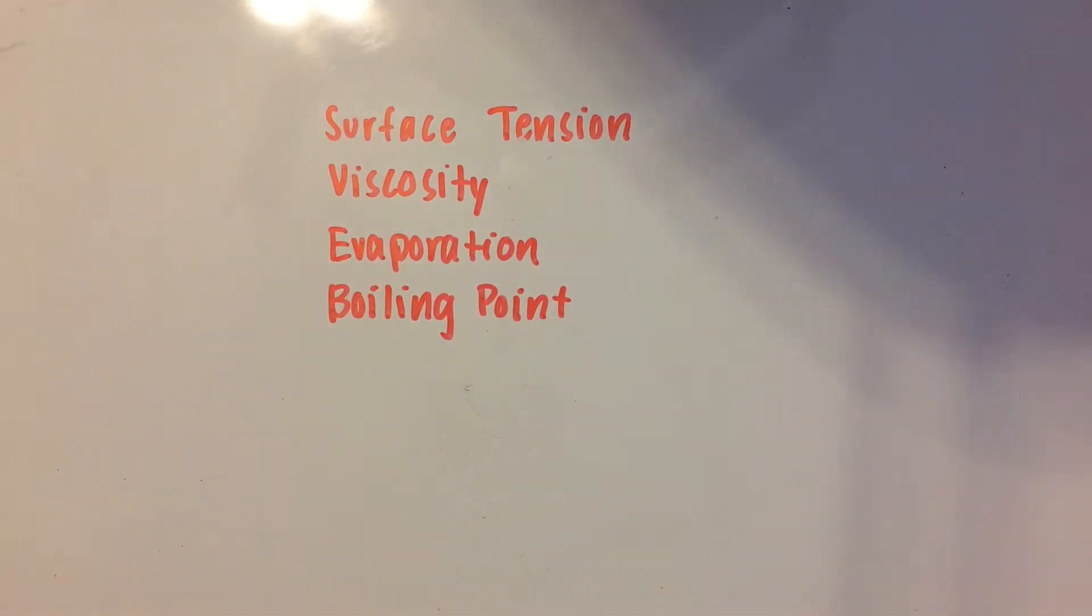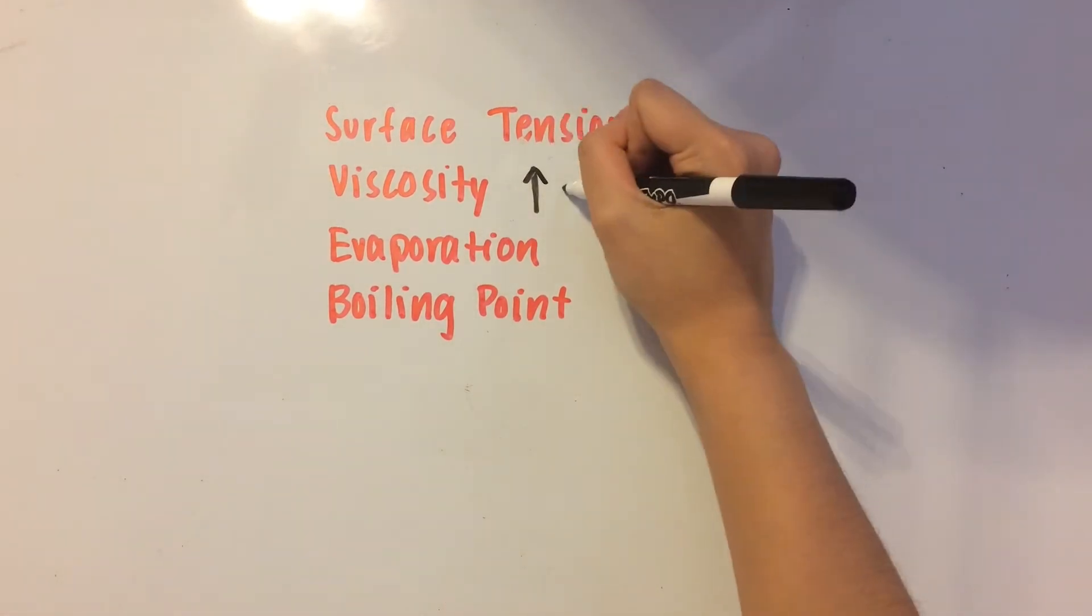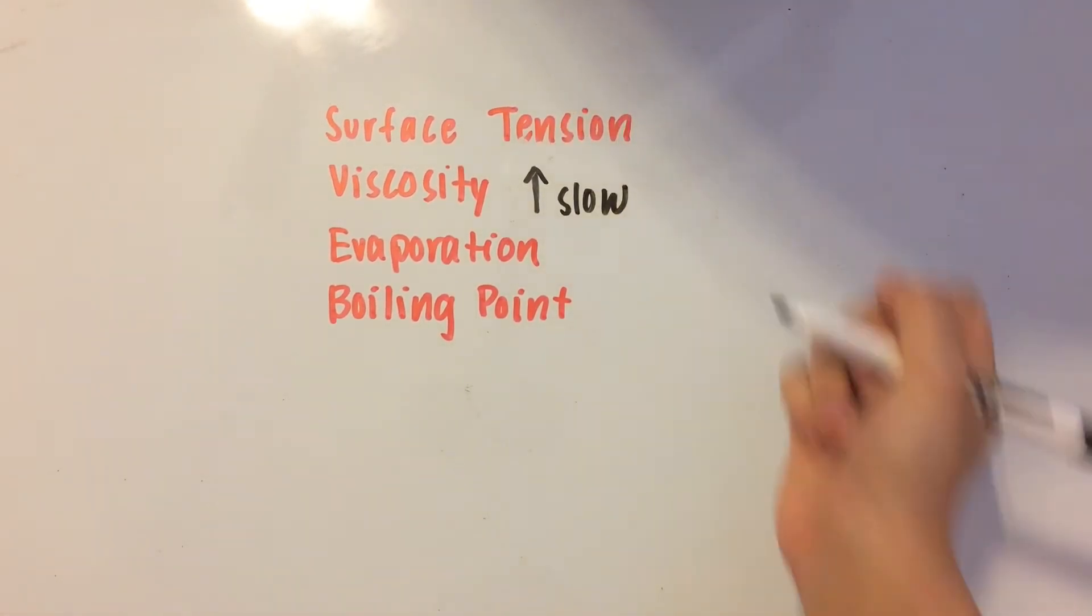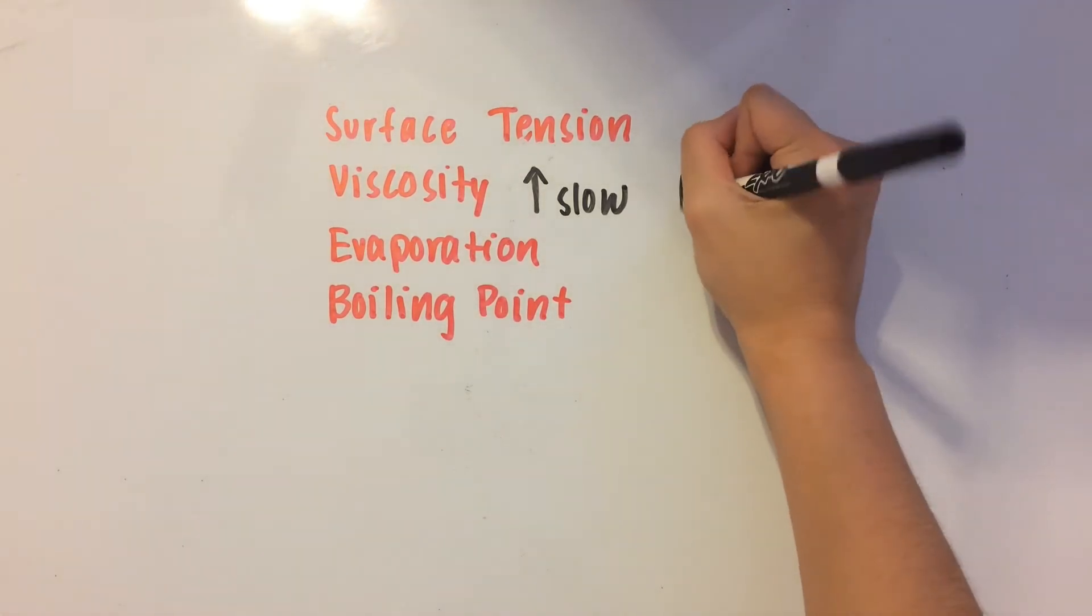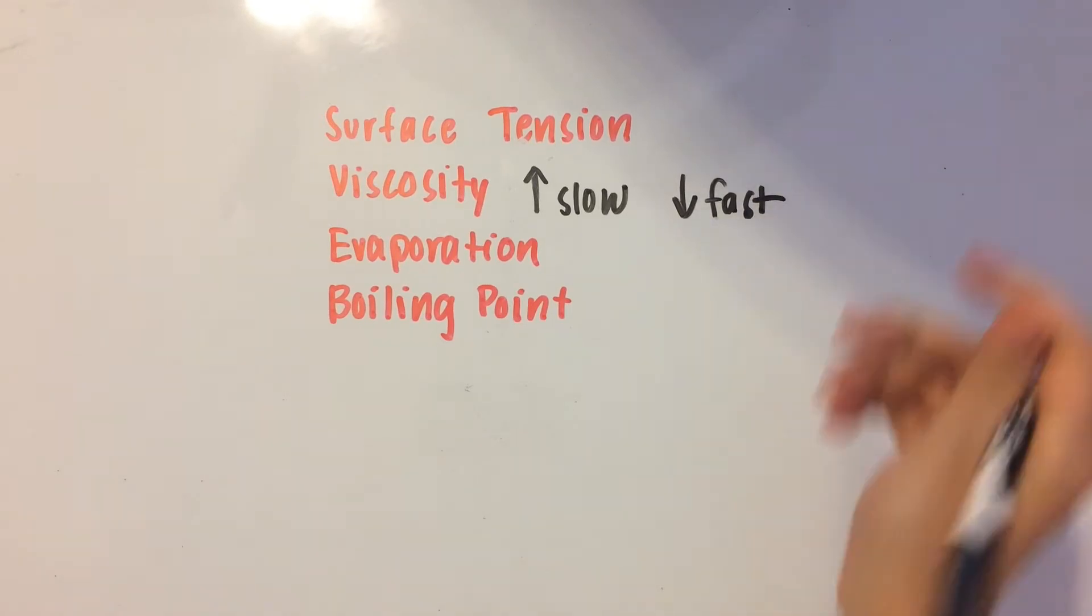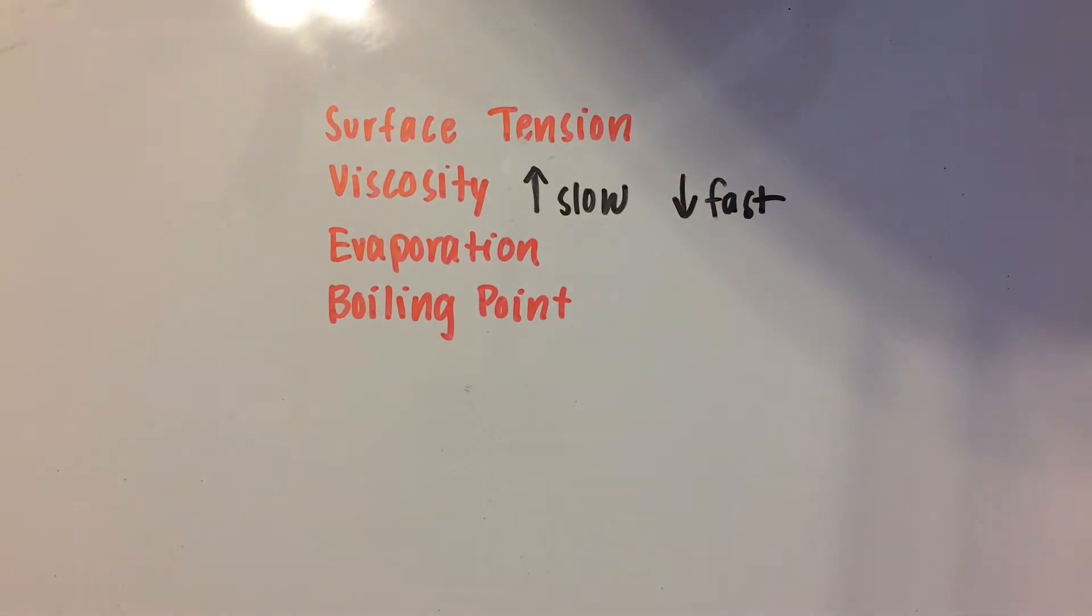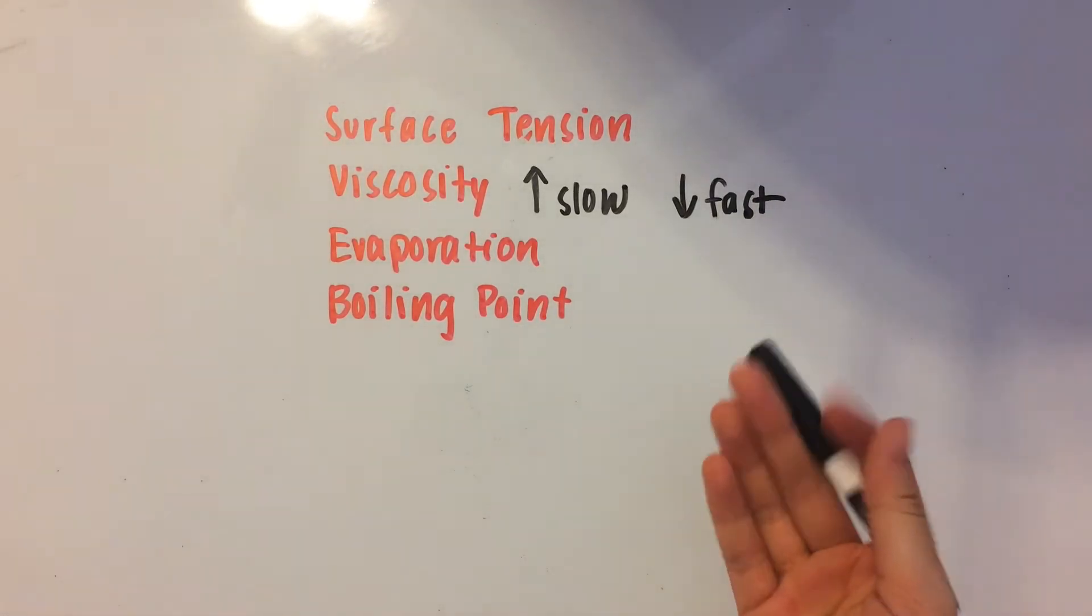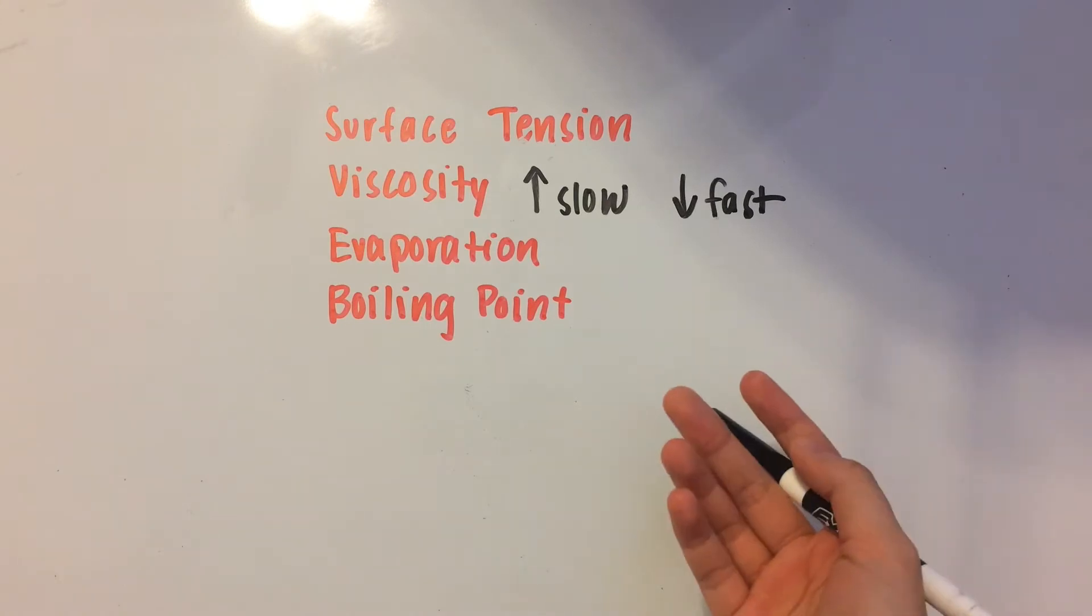Next one is viscosity. Viscosity is basically a liquid's resistance to flow. The higher the viscosity, the slower it's going to be. Think of syrup or molasses. The lower the viscosity, the faster it's going to be. Water has a lower viscosity than syrup because it flows faster.